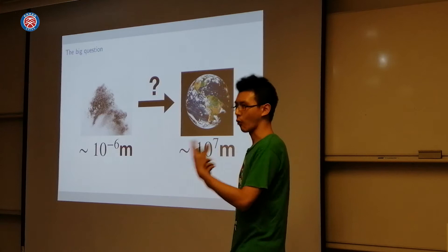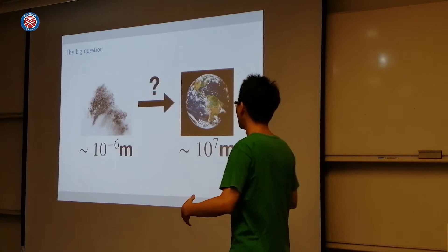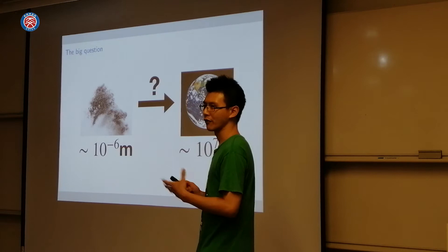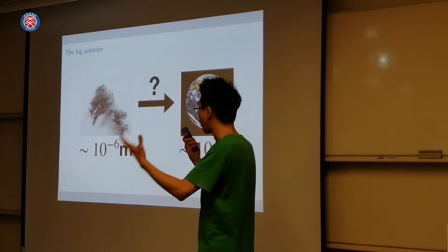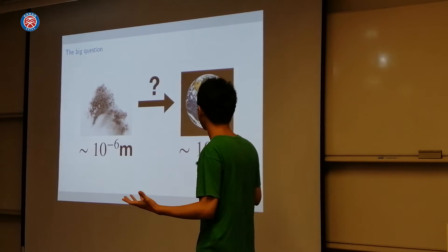That's a big question, because in the standard core accretion theory of planet formation, we start from micron-sized dust grains, and somehow it builds into — well, the Earth is several thousand kilometers in size. So this is a huge orders-of-magnitude problem.